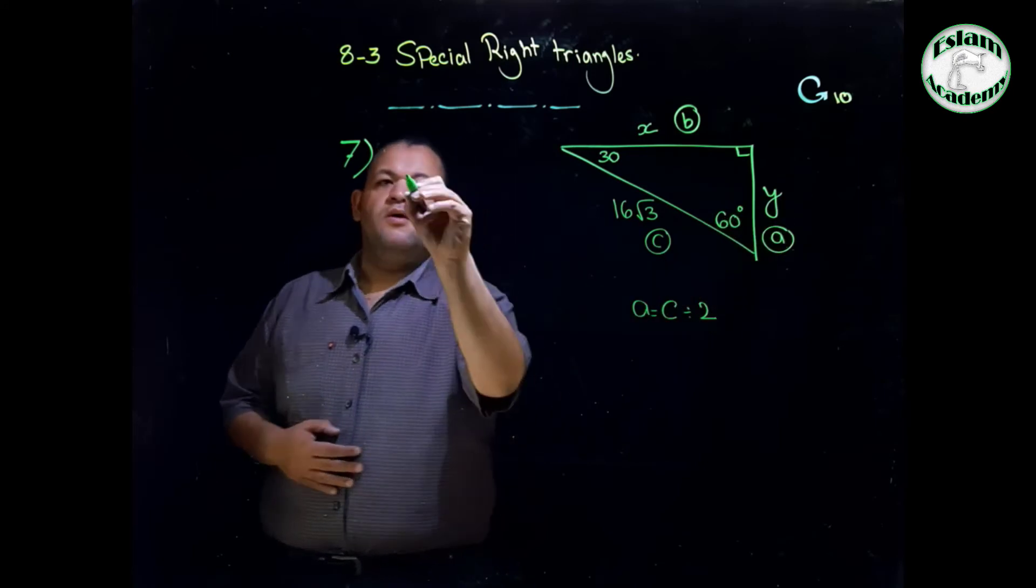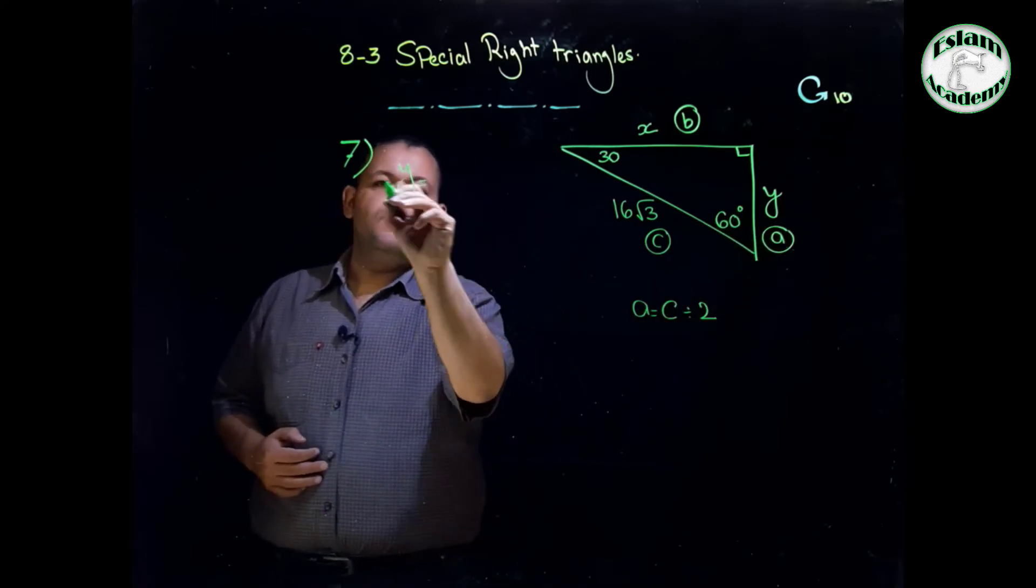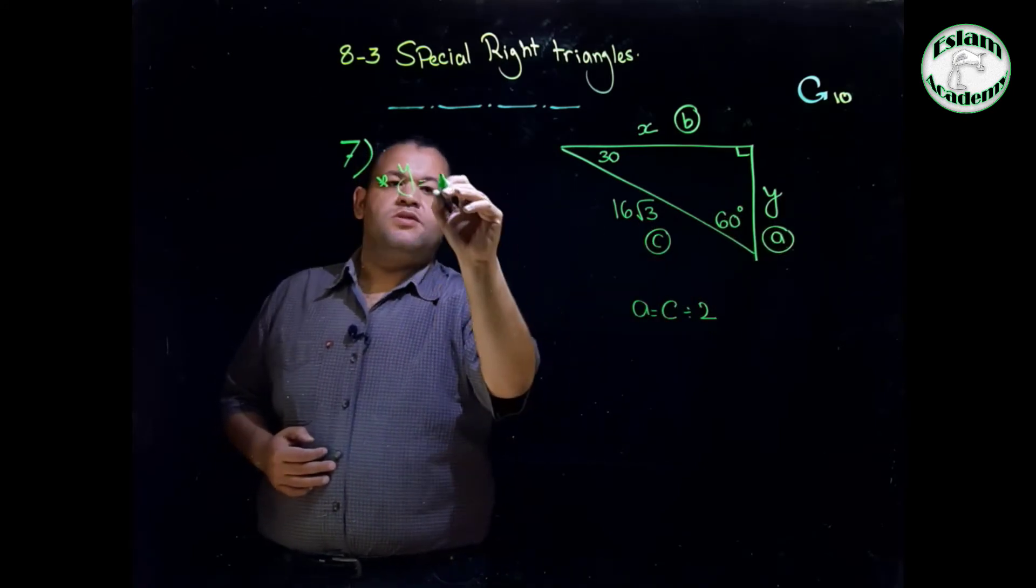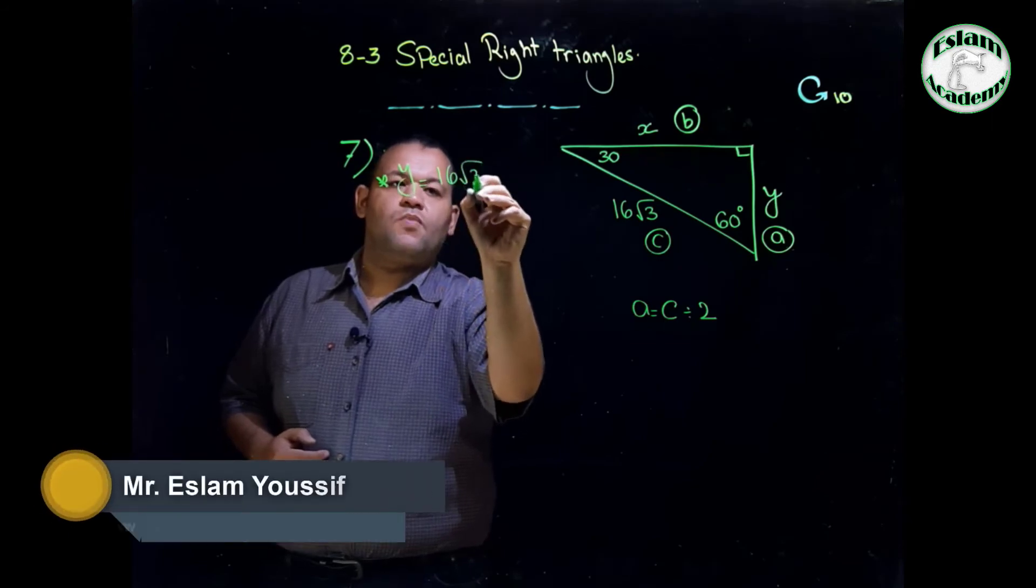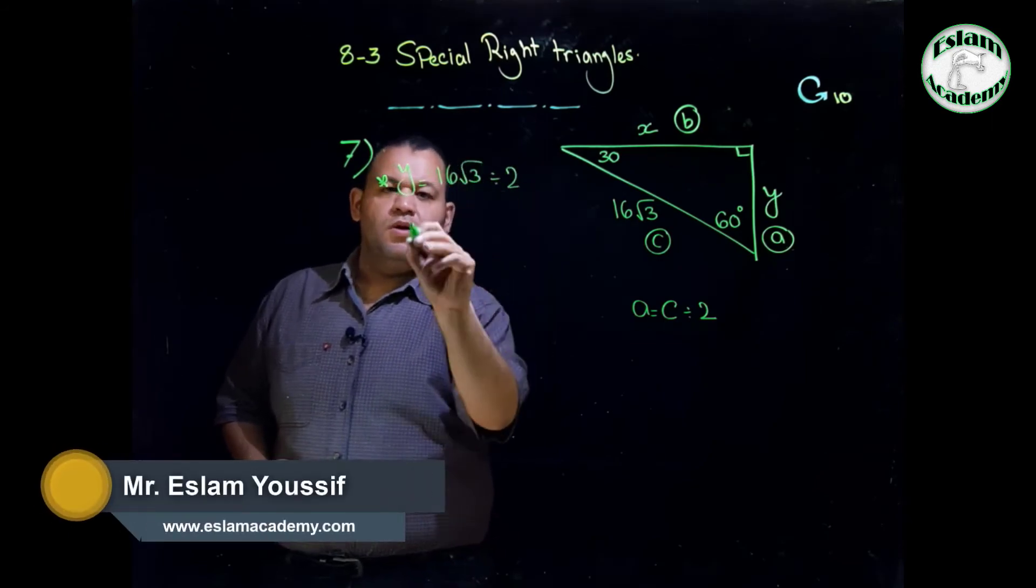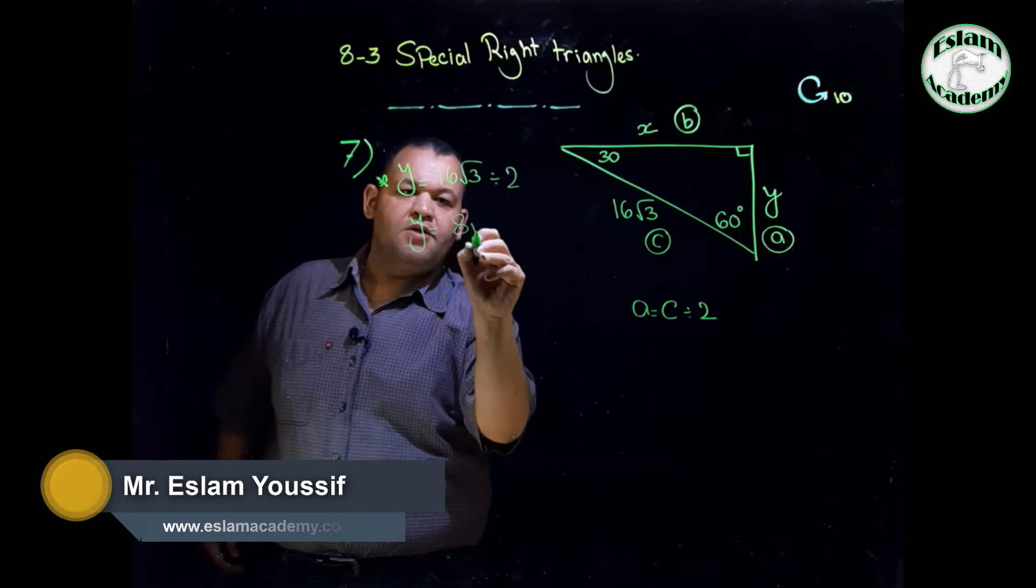A is Y. To find Y, it will be C, which is 16 root 3, divided by 2. Then Y equals 8 root 3.